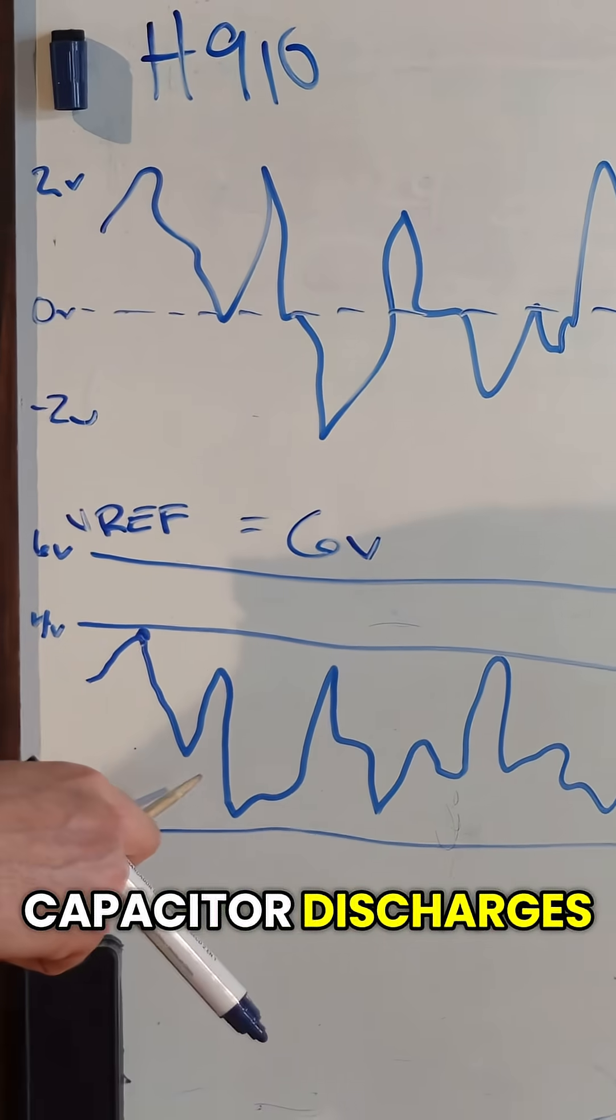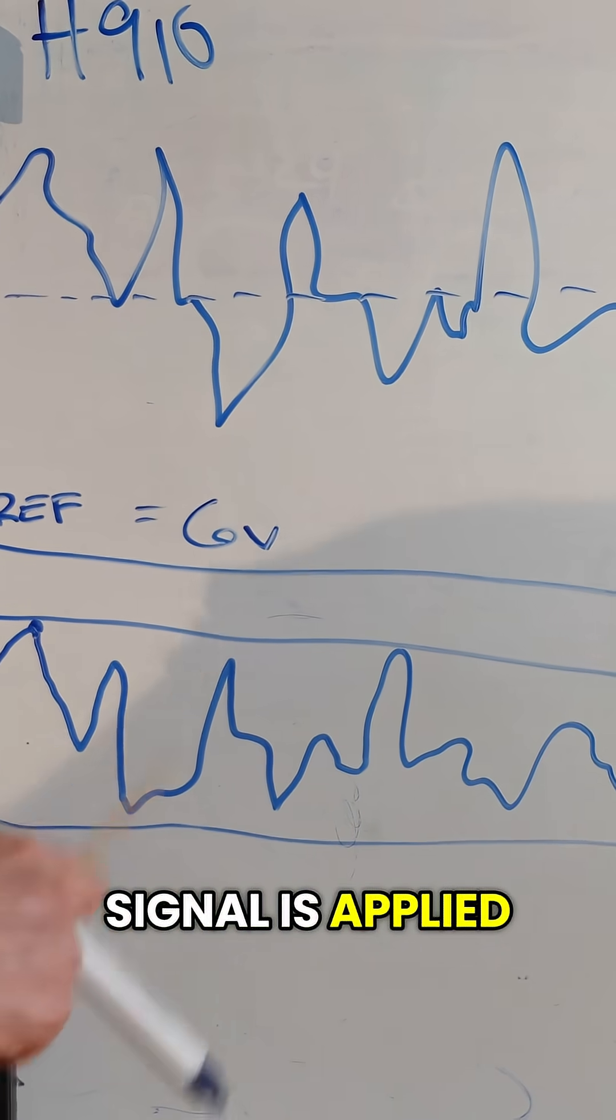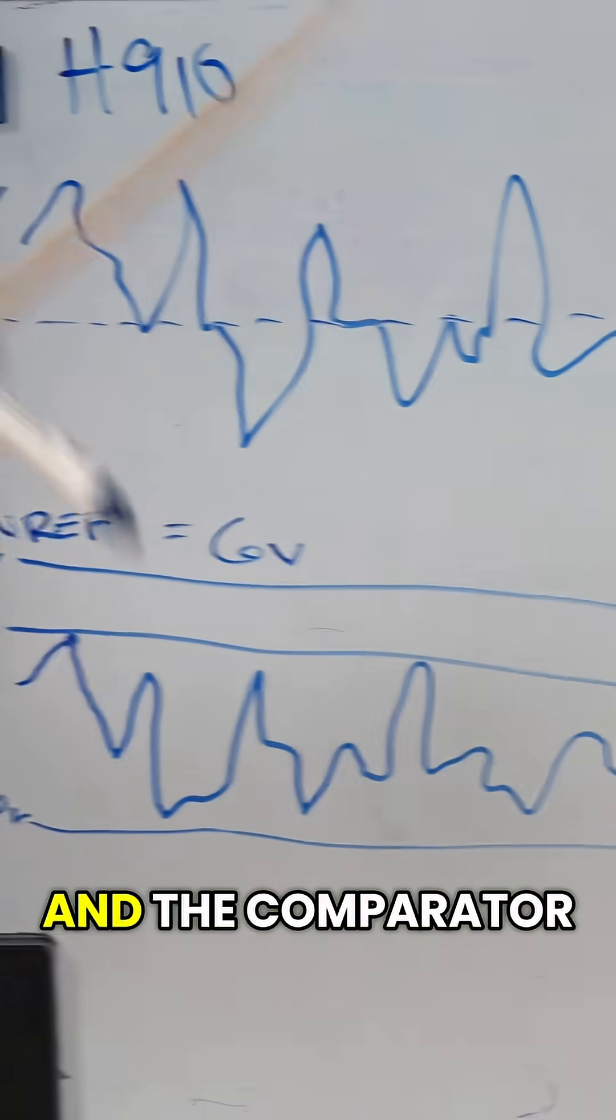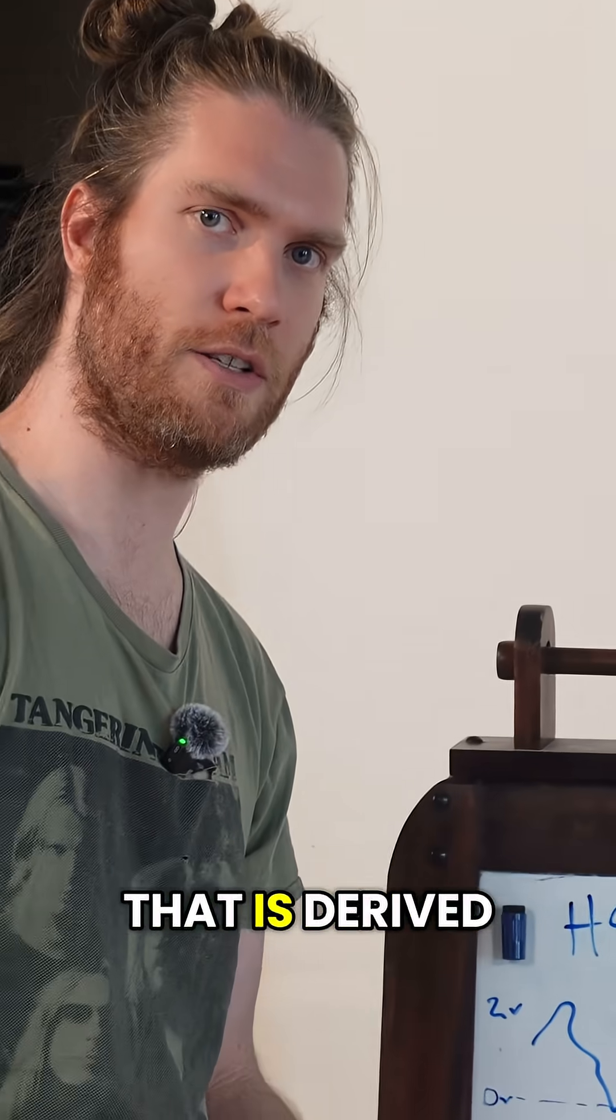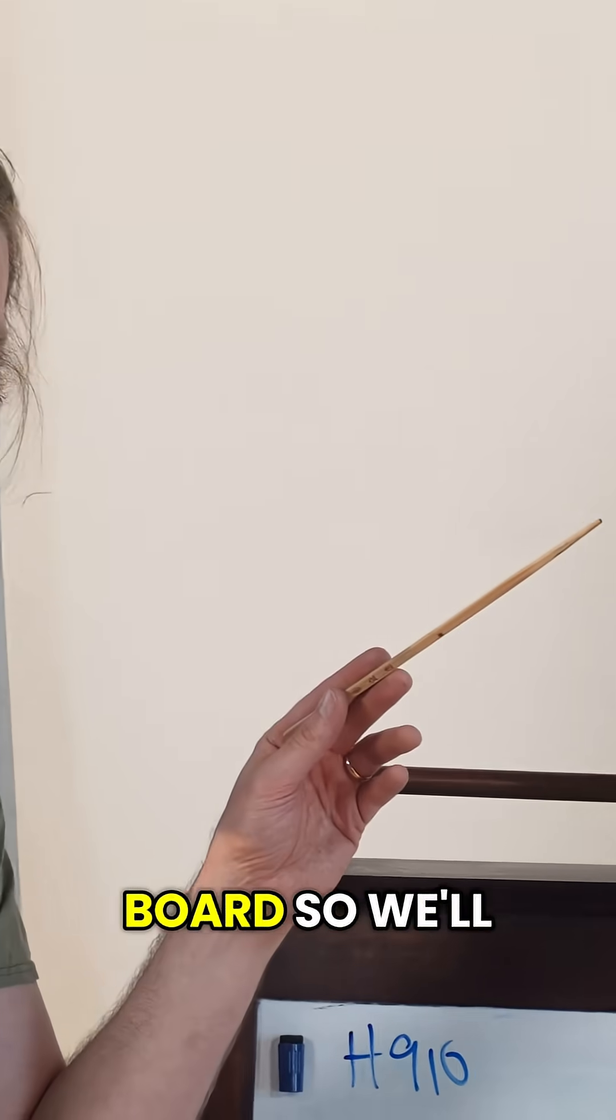And as the capacitor discharges, that discharge capacitor signal is applied to one input of a comparator. And the comparator receives a pulse of 33.5 kilohertz that is derived from the top board.